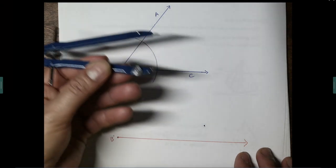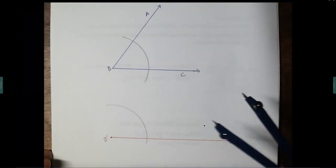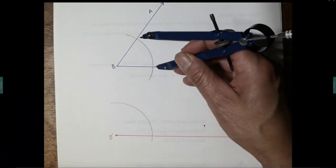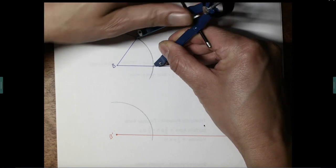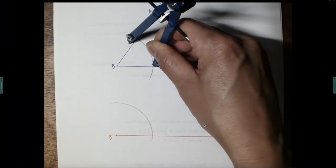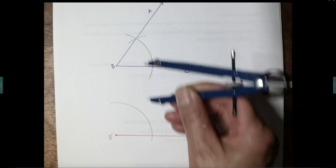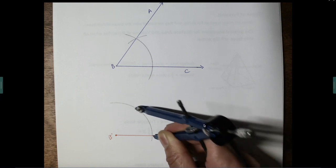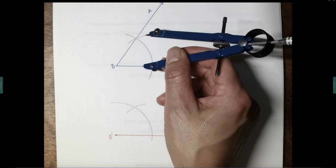Without changing the compass, put the pointy end on your new vertex and make a nice big arc — make it bigger than it needs to be. This arc corresponds to that arc. Now place the compass on one intersection point, open it so the pencil hits the other intersection point, and make an arc on the original. You must make this arc on the original for full credit. Then pull the compass over to the copy and at that intersection point strike the same arc.